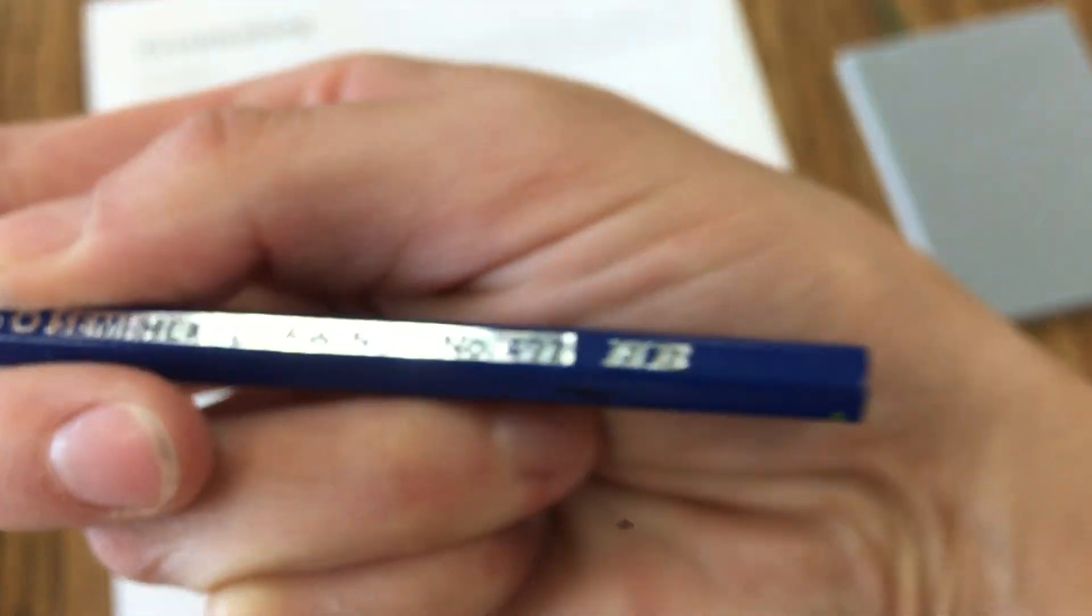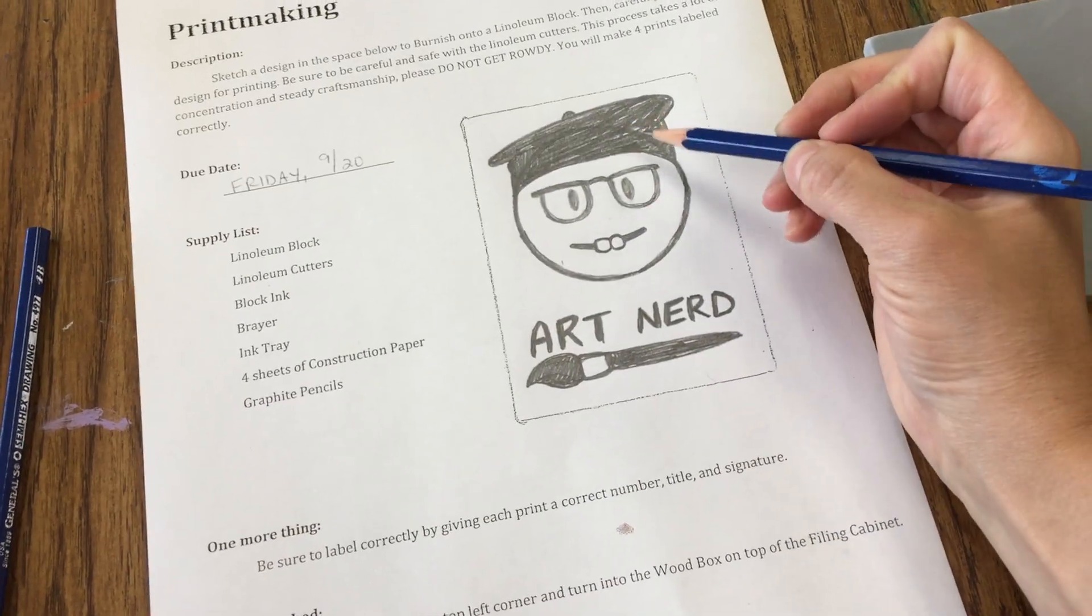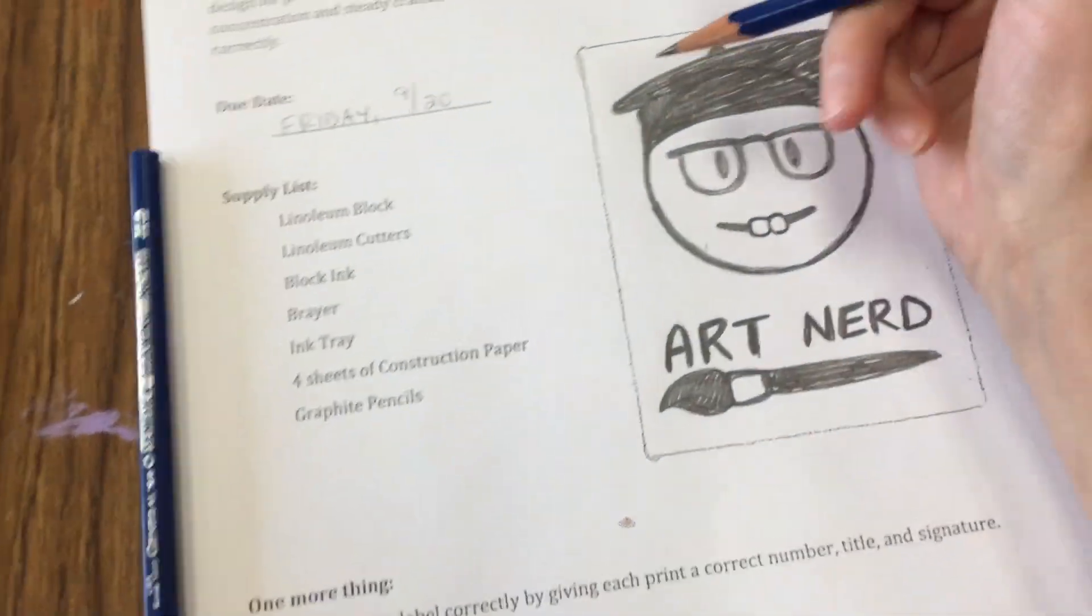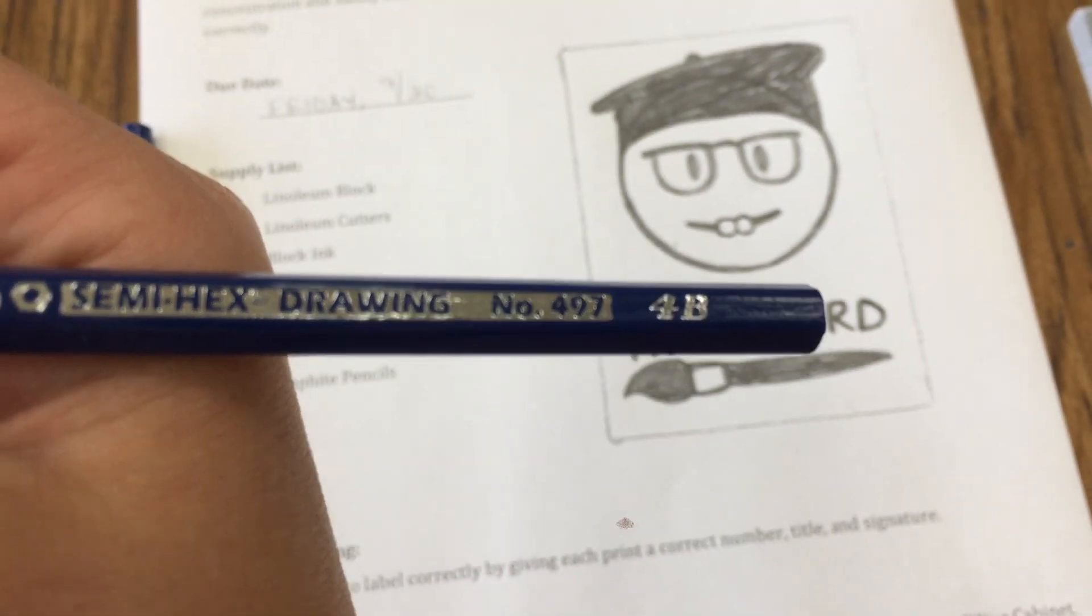I've told you in the past to draw light till you get it right. Here is the HB pencil. Hopefully you drew that lightly until you start giving it some darkness.